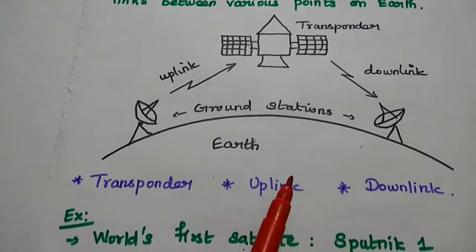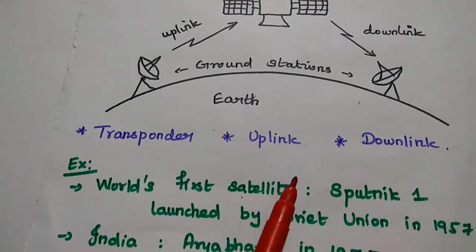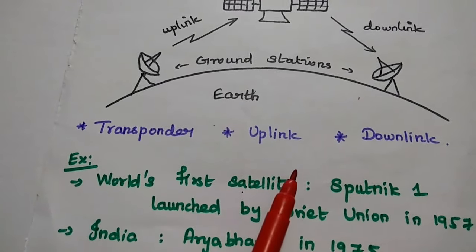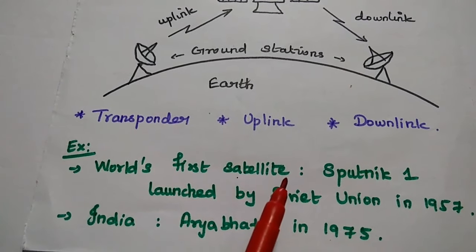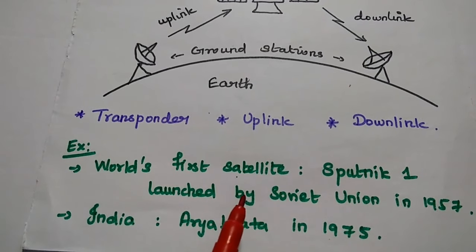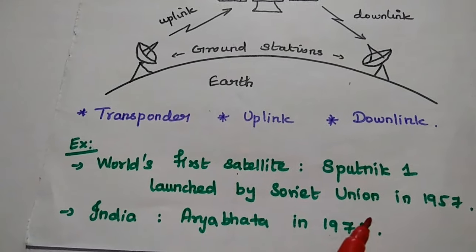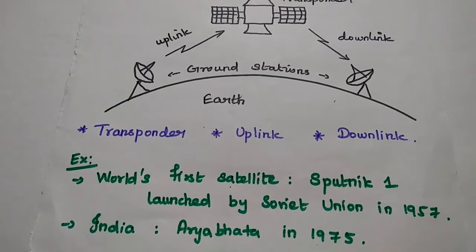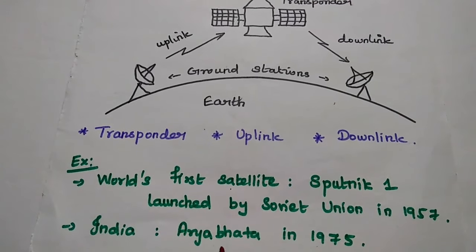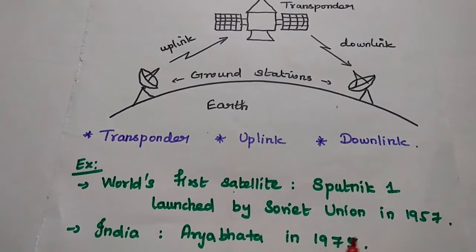The first satellite is Sputnik 1. The world's first satellite, Sputnik 1, was launched by the Soviet Union in the year 1957. India launched its first satellite, Aryabhata, in the year 1975.